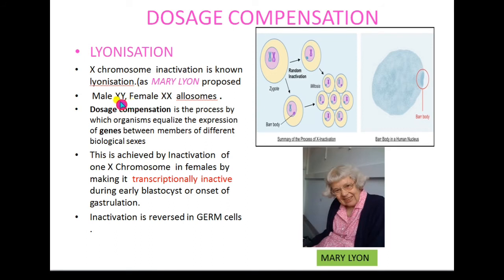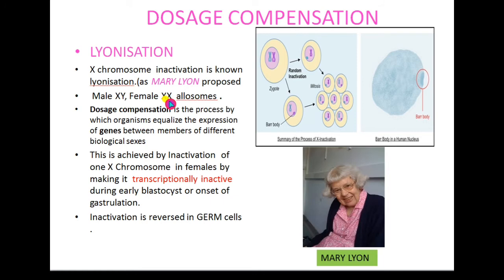Males contain 1 X chromosome and 1 Y chromosome, while females contain 2 X chromosomes. So males have only a single copy of genes present on the X chromosome, whereas females have 2 copies. To make the gene dosage equal in both sexes, inactivation of one of the X chromosomes occurs in females. This process is known as lyonization, and it helps achieve dosage compensation — that is, equalizing the expression of genes present on the X chromosome in both males and females.